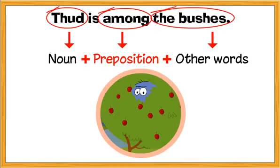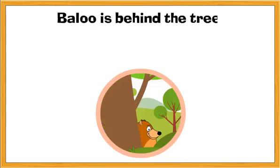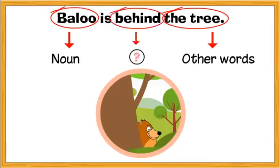Let's take another example. Baloo is behind the tree. We know that Baloo is the noun and the tree are the other words in the sentence. So then, what is "behind"? Behind shows the relationship between the noun and the other words in the sentence. Therefore, behind is a preposition.